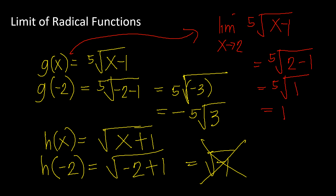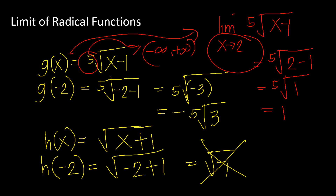Since the domain of an odd-indexed radical is all real numbers, all limits exist. If the two-sided limit as x approaches 2 is 1, then both the left and right one-sided limits as x approaches 2 are also equal to 1. Take note of that.